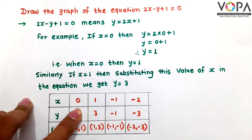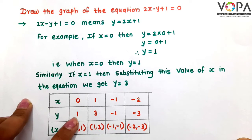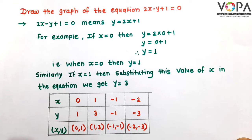Here, when x is equal to 0, then we get y is equal to 1. Therefore, the coordinates of the point are (0, 1).